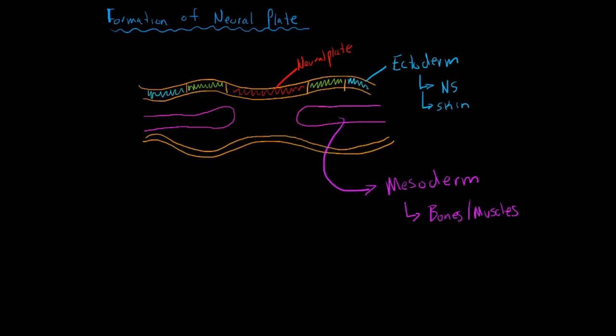And then the last layer, which is on the bottom here, which I will do in yellow, right here, this whole little thing right here is called the endoderm. And what this forms is the lining of many internal organs. So we'll just put lining of organs.